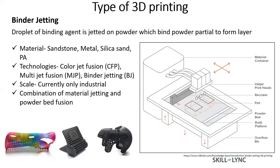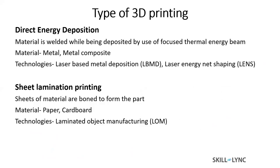After binder jetting, the next two processes are direct energy deposition and sheet lamination printing, which are not that common and are only on a limited scale. In direct energy deposition, your material is welded while being deposited by use of a focused thermal energy beam. In simple words, you are doing welding in 3D space — you deposit your material and simultaneously, by use of a really high-energy beam — typically a laser — you fuse or weld that material. This printing is obviously only for metal, and is only on a limited scale as of now.